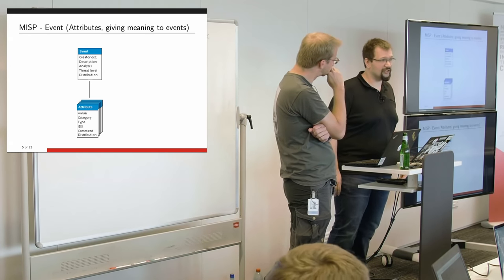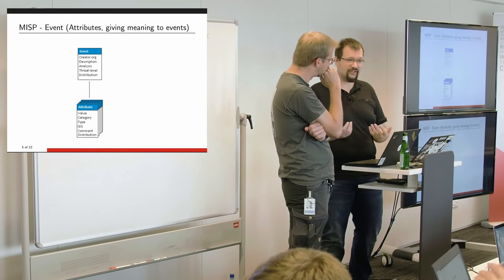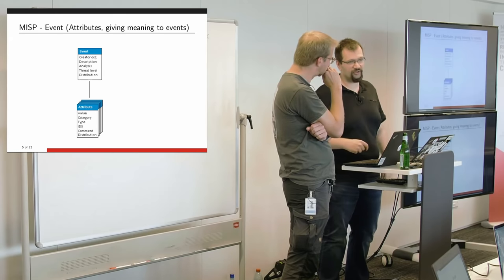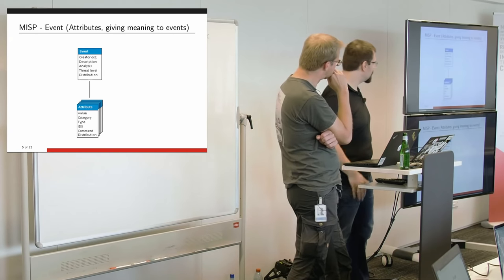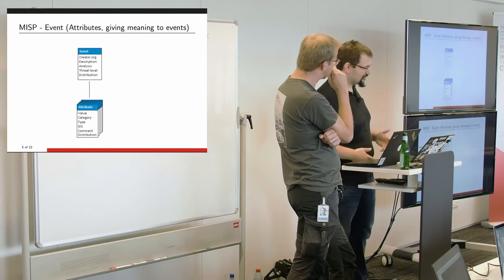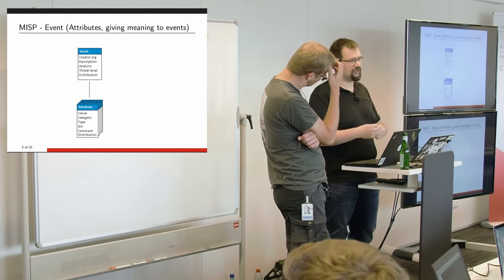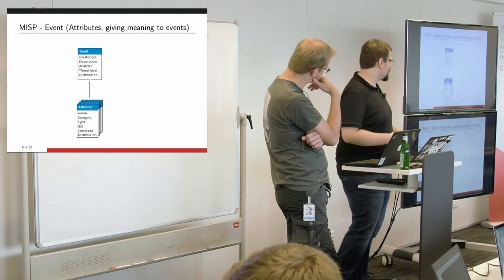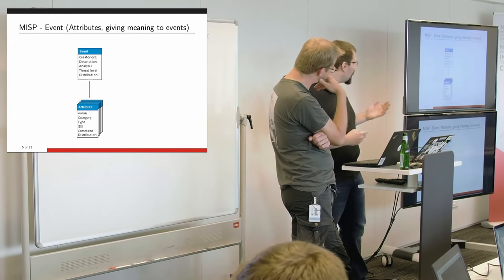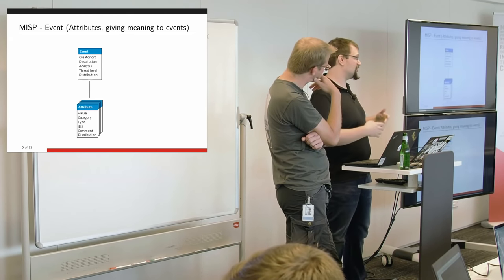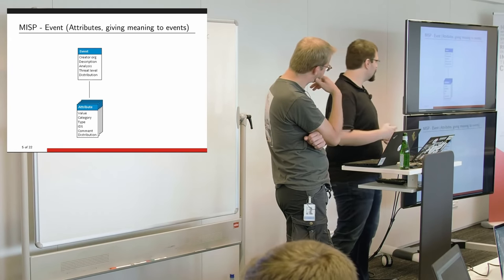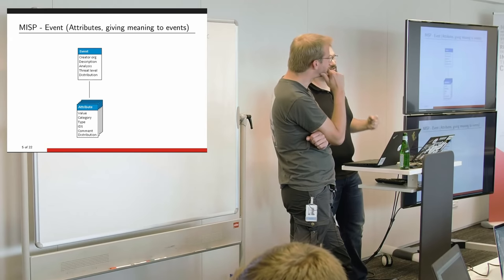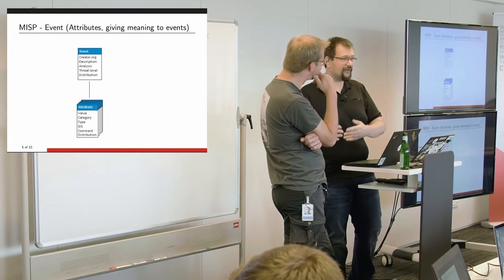Each event is made up of a list of attributes — those atomic points of data that could describe an IP address, a malware sample, or even a car plate number depending on your community. The data is described in a tuple of four fields: the value (the atomic value itself, e.g., the IP address), the category (why it's relevant — e.g., network activity or payload delivery), and the type (whether this IP is a destination, a source, an MD5 hash, etc.).